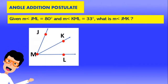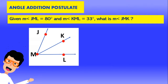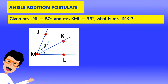So let's try doing a problem. Given that the measurement of angle JML — which is the whole thing — is 80 degrees, and that angle KML is 33 degrees, what is angle JMK?